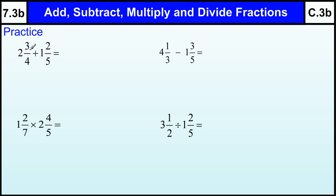Okay, so 2 plus 1 is 3. Put them out of 20. 3 times 5 is 15, 4 times 2 is 8. So that's 23 out of 20. 3 and 23 out of 20, which is 4 and 3 twentieths.